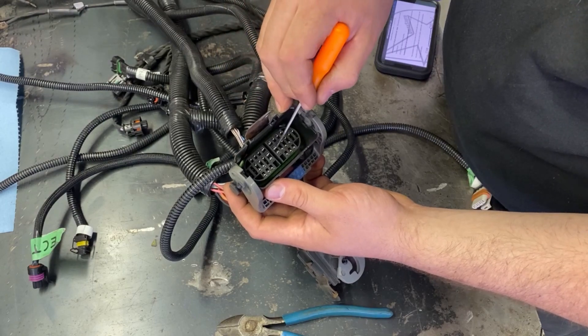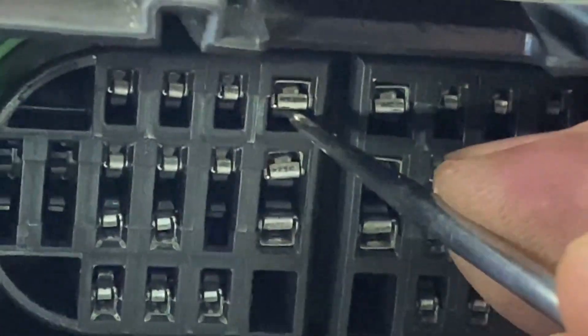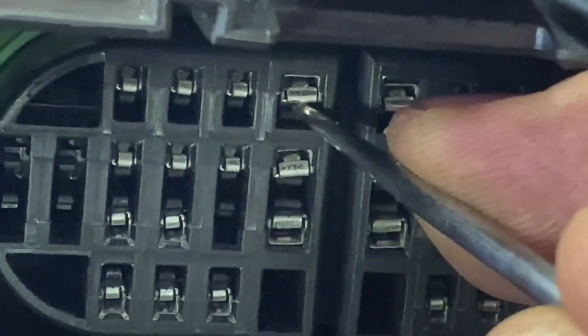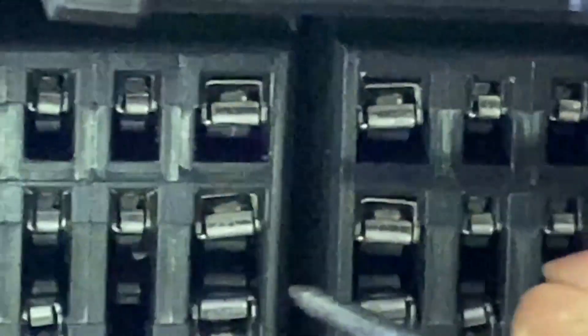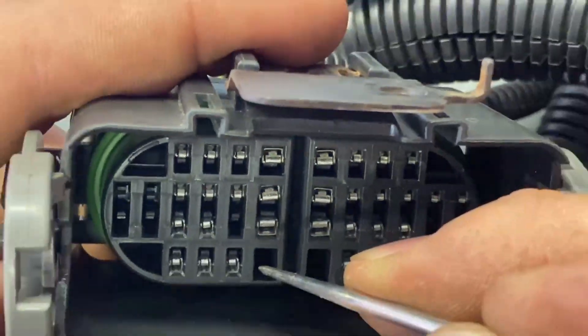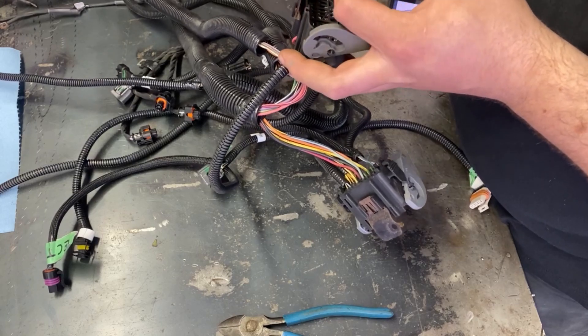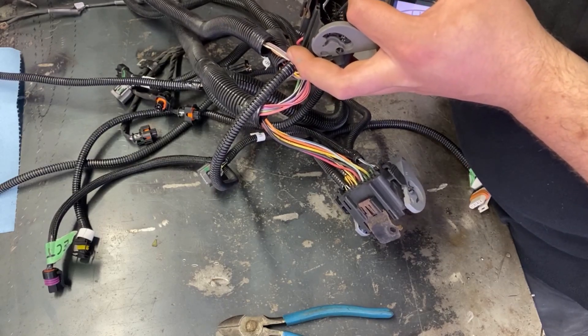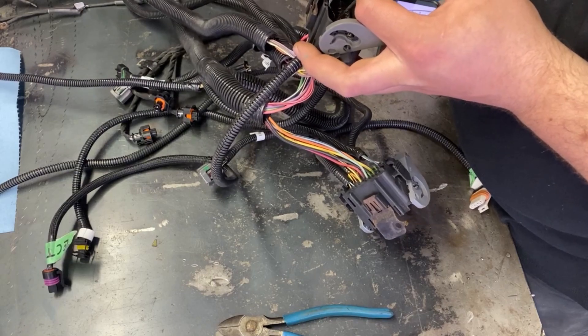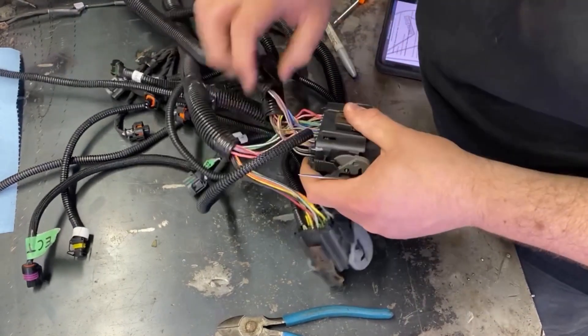It's a big pin and underneath the pin there's a black tab. You'll get in there with a little pick or a screwdriver on the black tab, and then you'll be able to push the pin out from this side or pull it out from the back side. Once you get it past that lock, it will be easy.